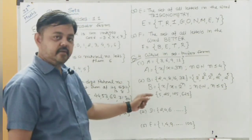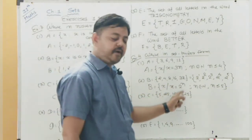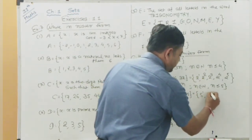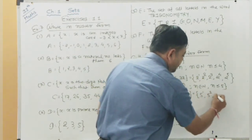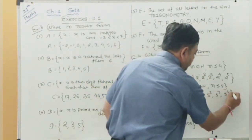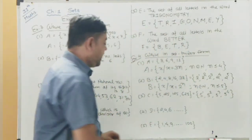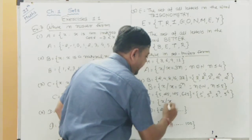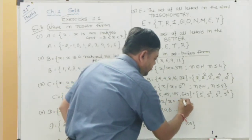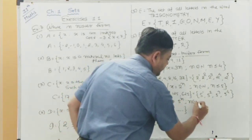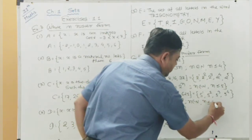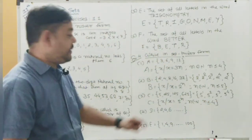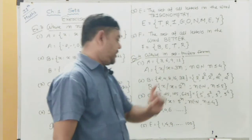Set C = {5, 25, 125, 625}. This can be written as 5 raised to 1, 5 squared, 5 cubed, 5 to the 4th. So Set C = {x : x = 5^n, n ∈ N and n ≤ 4}.